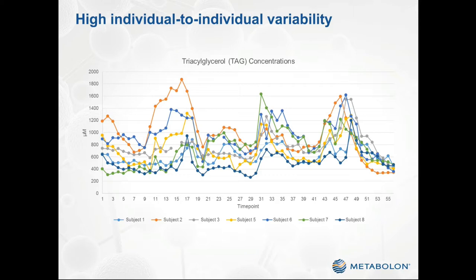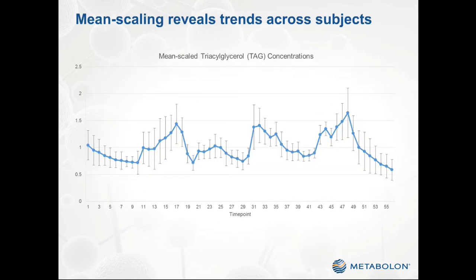One of the first things that we noticed when analyzing the data was the incredible degree of individual-to-individual variability. Here this is exemplified by the micromolar concentration of total triacylglycerol across the donors. You can easily see that the lowest concentrations for one donor are pretty close to the highest concentrations for some of the other donors. The ability to analyze and faithfully record this type of individual heterogeneity is one of the great strengths of a quantitative lipidomic profiling platform. For comparing across subjects and discerning trends over time, we found it useful to mean-scale the data — each subject's concentrations were scaled to that person's overall mean — at which point the data from different subjects could be combined and clear time-dependent trends could be extracted.